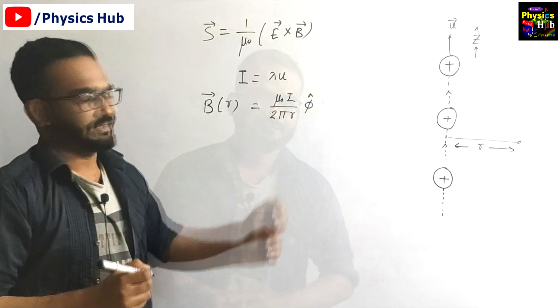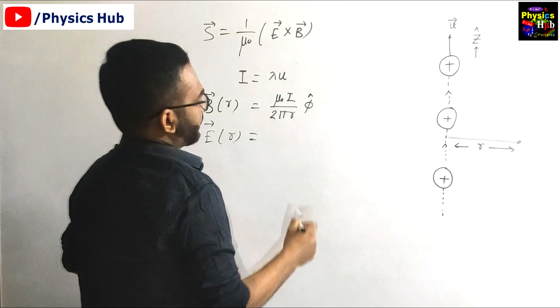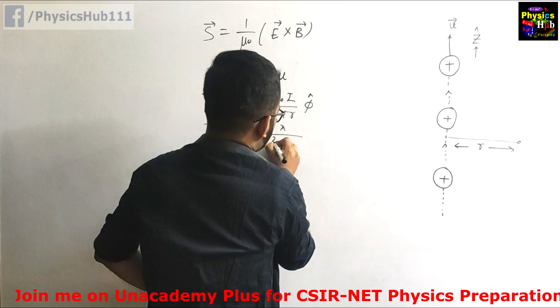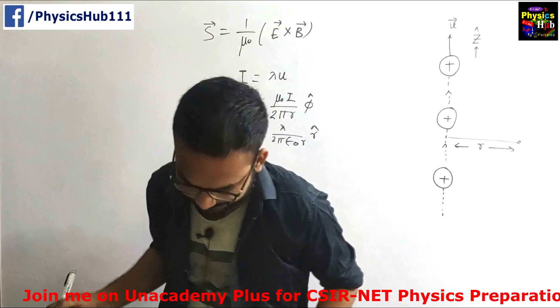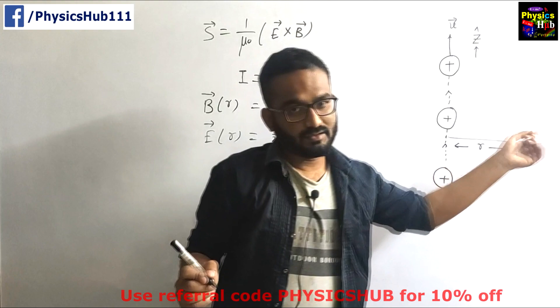Now what will be the electric field? Electric field at a distance r from this kind of line charge we know is lambda by 2 pi epsilon naught r into r cap. This is the formula. This r is the distance and this is the radial coordinate.